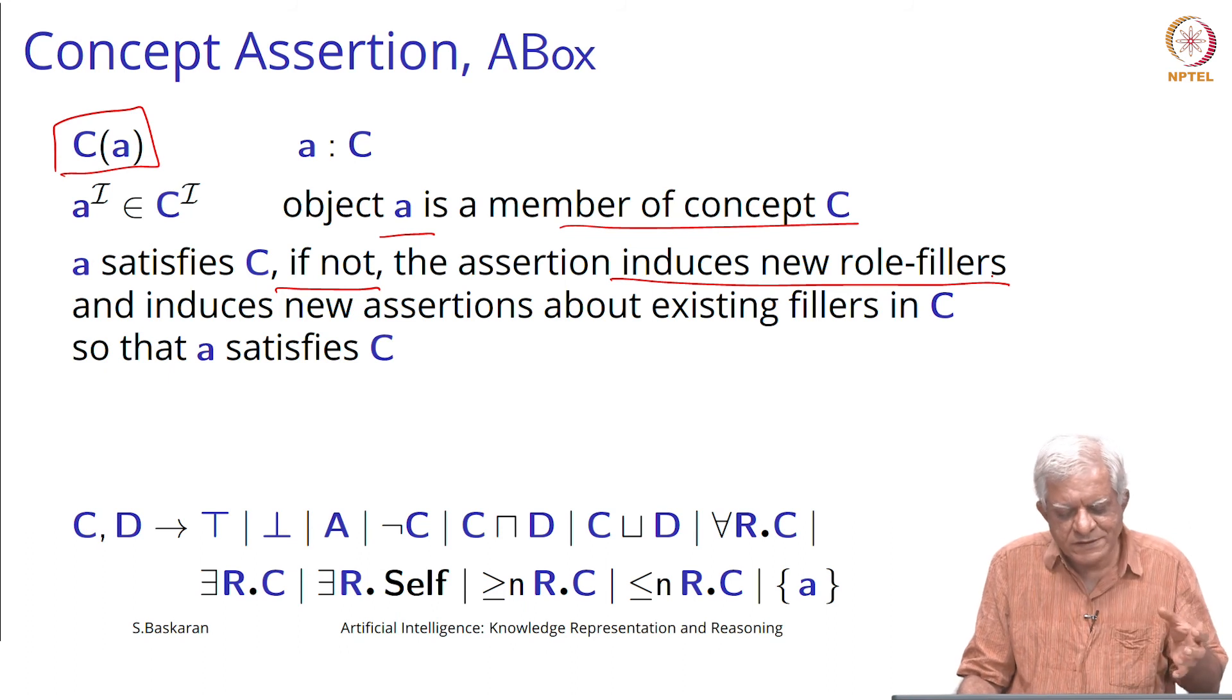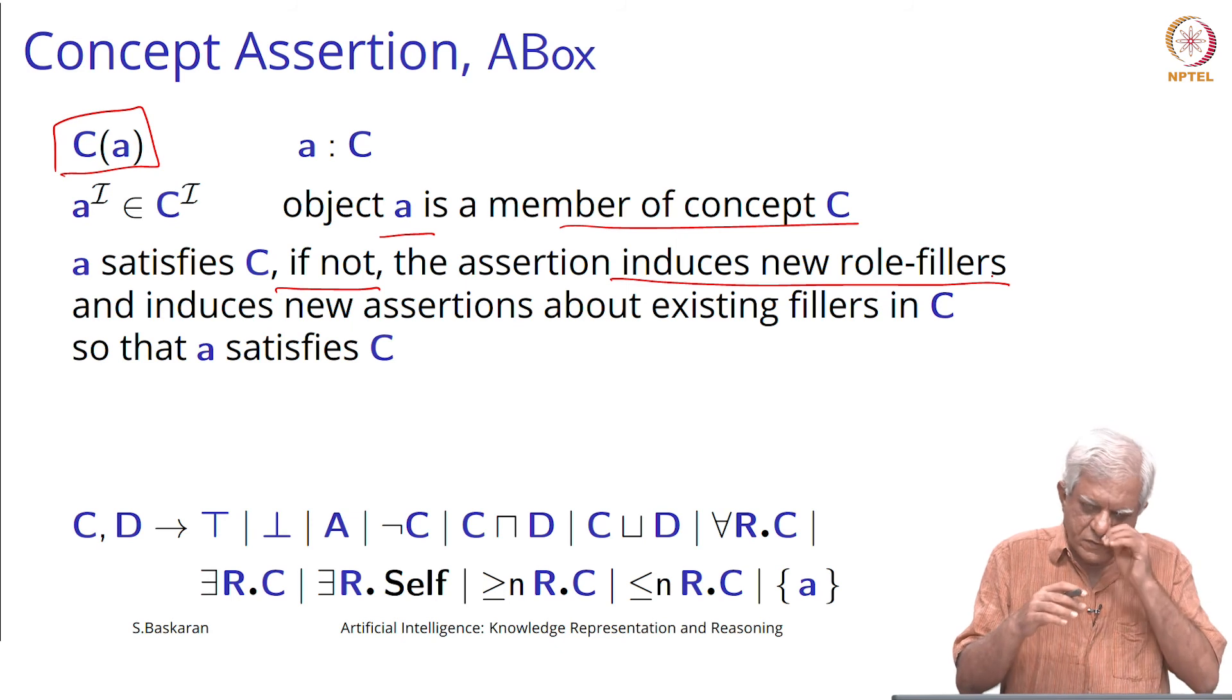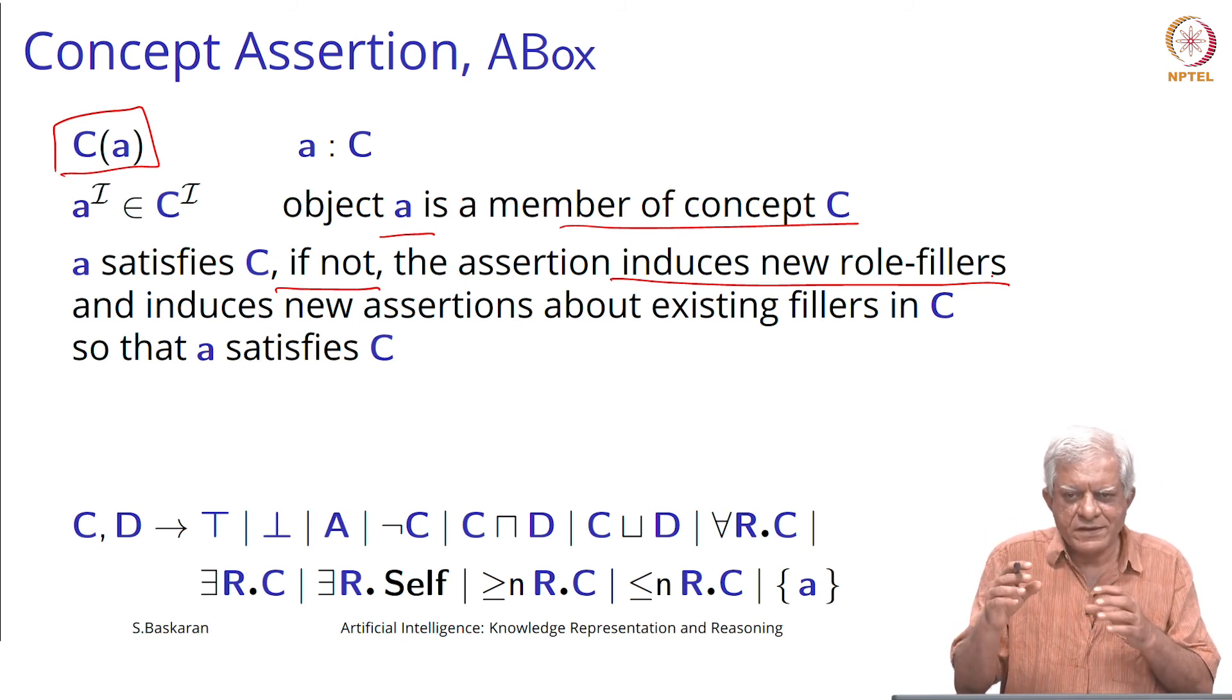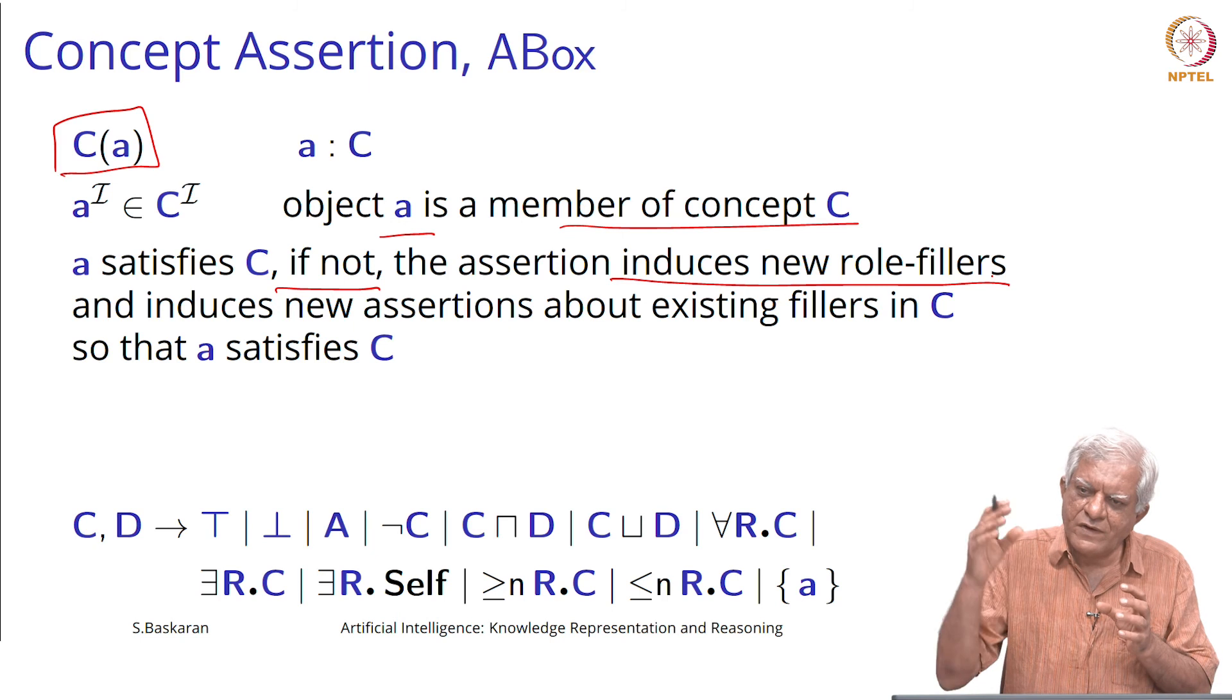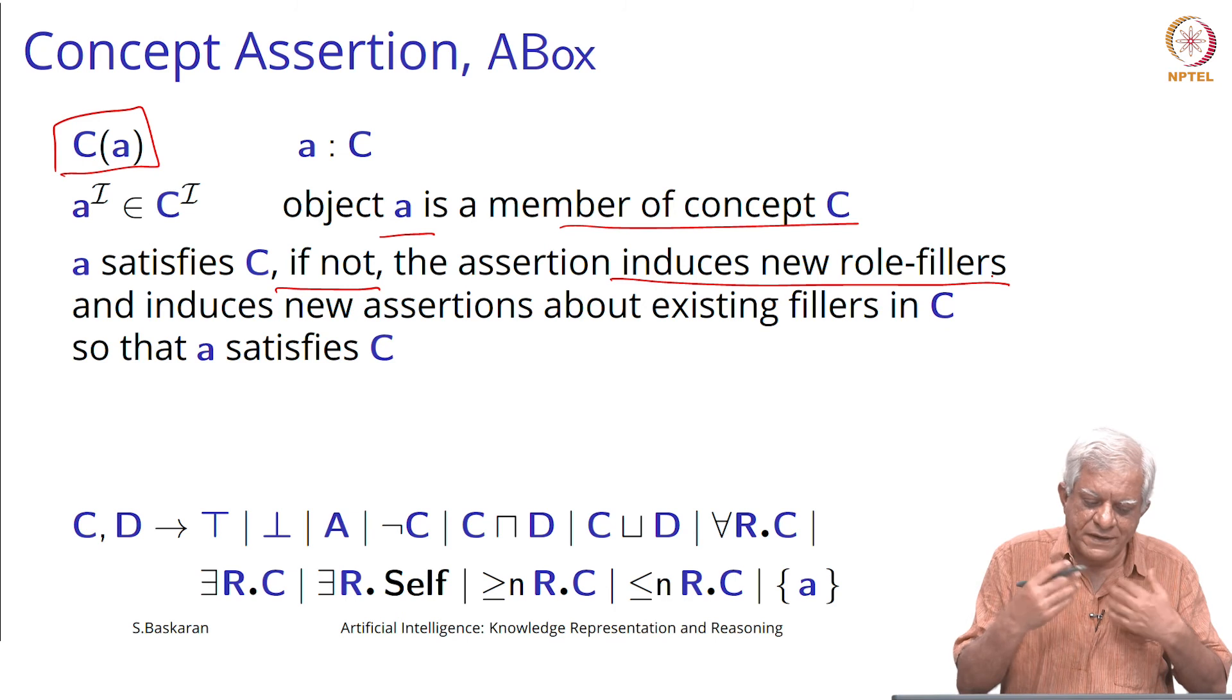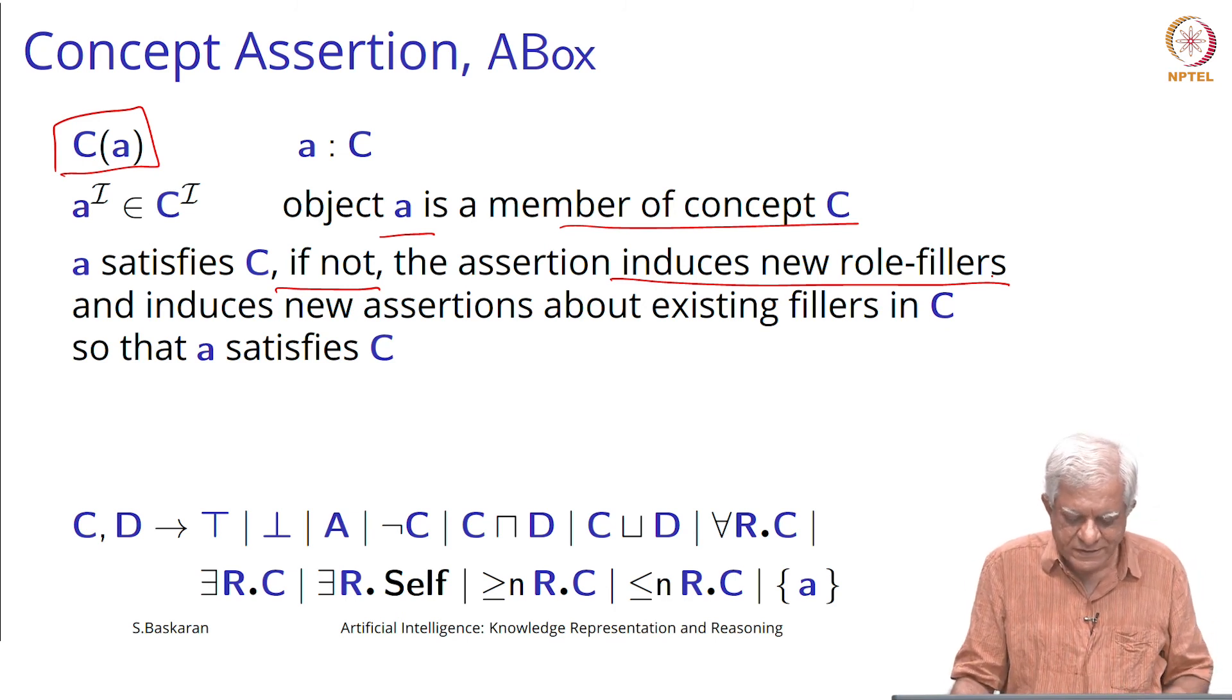This will induce the fact say that a belongs to the set who have siblings, a belongs to the set who are female and who have siblings who have children or who have at least one child. Then if we simply assert that a is an aunt, then this will automatically be added to that.